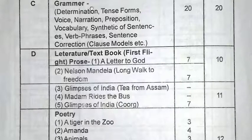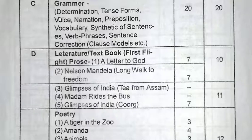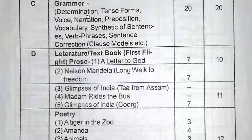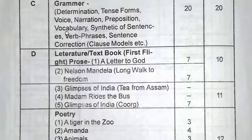Grammar section is 20 marks. In the pre-final, the grammar section includes: determiners, fill in the blanks, tense — correct tense, voice, narration, preposition, vocabulary — similar words, distinguishing words, make sentences, synthesis of sentences.